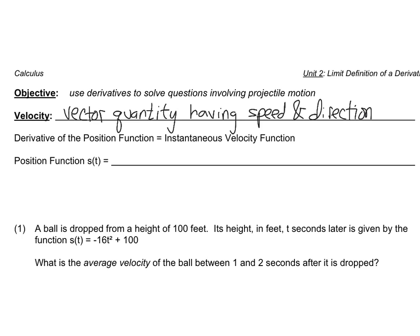We'll talk about the position function, which you might know from previous courses. That would be one-half at squared plus initial velocity times time plus the initial position. We're going to work with free-falling objects, but this is not necessarily always related to free-falling objects. We're going to apply this in the basketball project, which we'll start after we take the unit test.